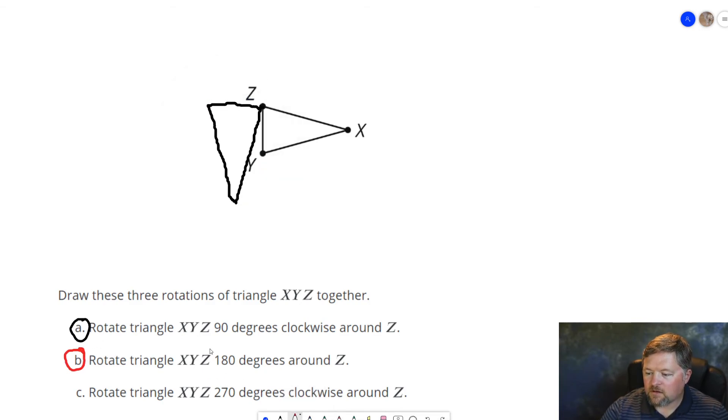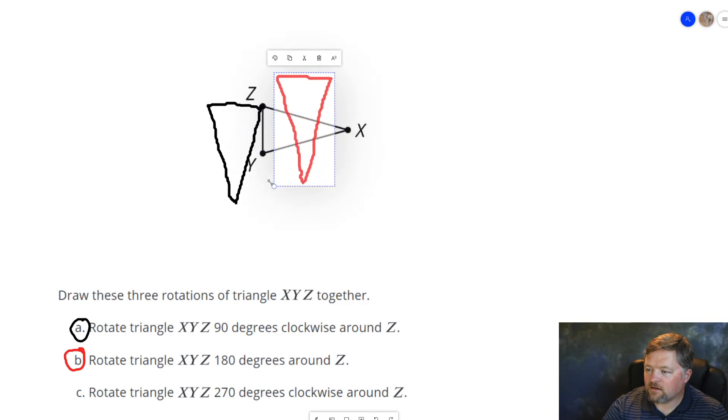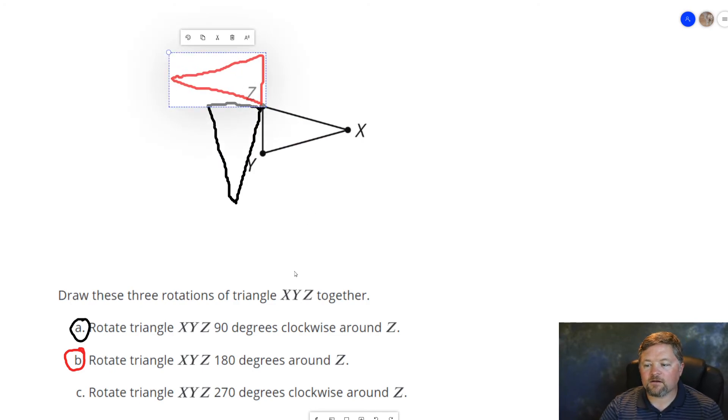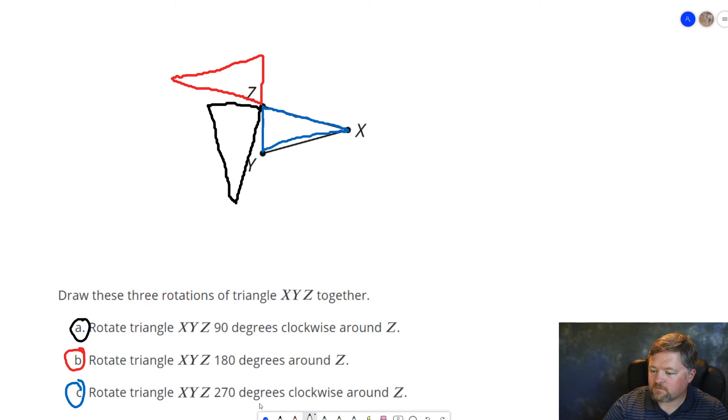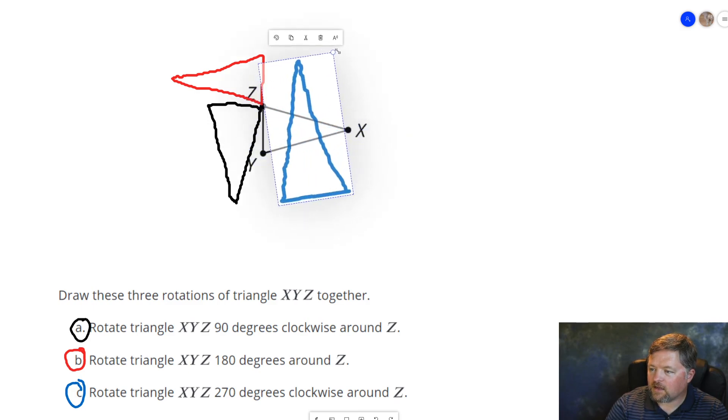Now I'll do one in red. Rotate X, Y, Z 180 degrees around Z. So there's my figure. I'm going to rotate it 90, 180 degrees, and we're going around point Z, which will put it right there. 270 degrees. Draw my figure again. 90, 180, 270 around Z.